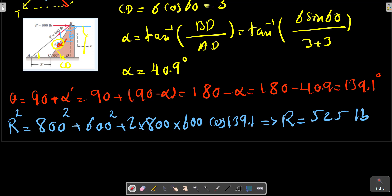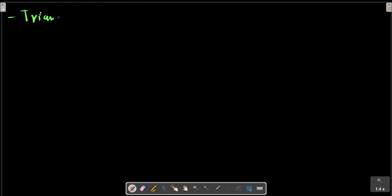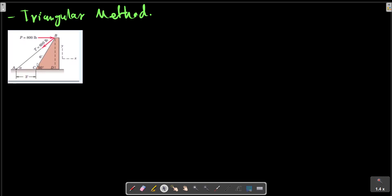The next method can be used is triangular method. A vector should be connected to the tail of another vector. In this problem T, and the resultant is the third side of the triangle. So we have three angles here: theta, alpha, and alpha.